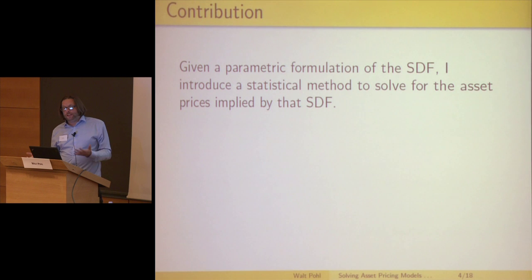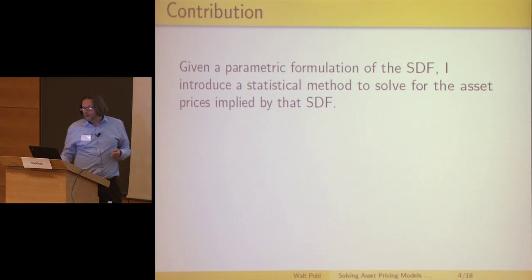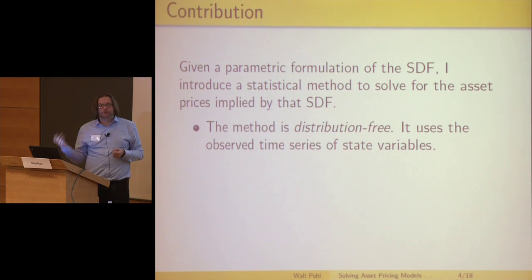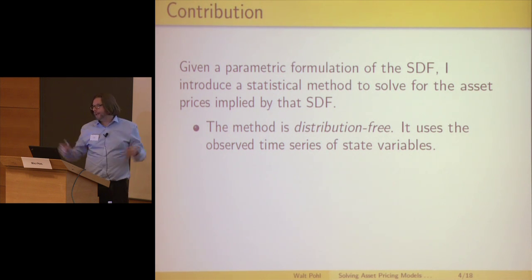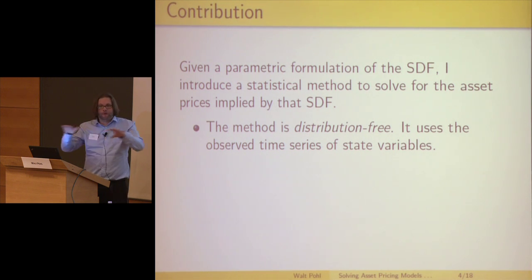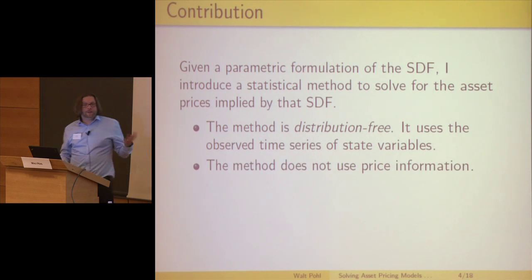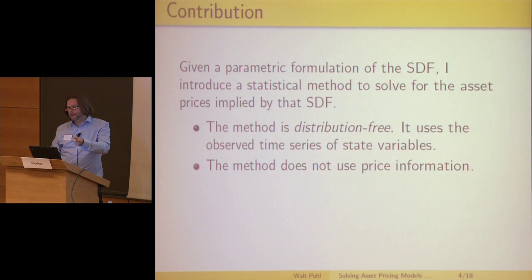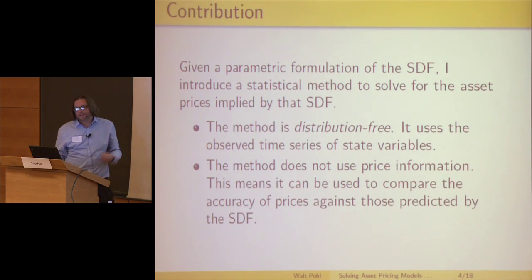If you give me a stochastic discount factor where you have a parametric formulation, so m is given to you by theory, I introduce a statistical method which is distribution free. You can solve a model like this where you write down specifications for everything — for a CRA model you'd write down a specification where consumption growth is log normal or some specific distributional assumption. My method is distribution free: I just take the time series of consumption or whatever your variables are and go from there. Crucially, the method doesn't use price information — it produces prices as an output, not as an input.